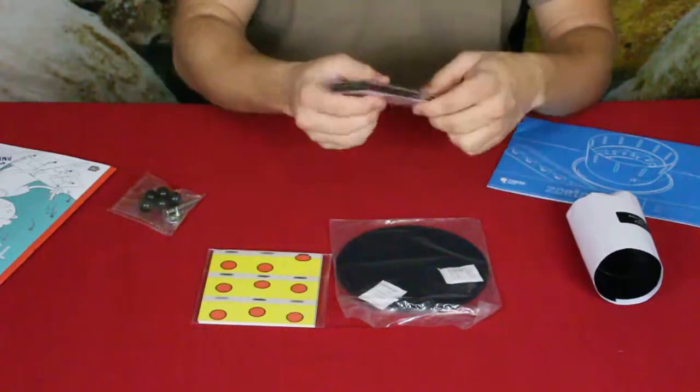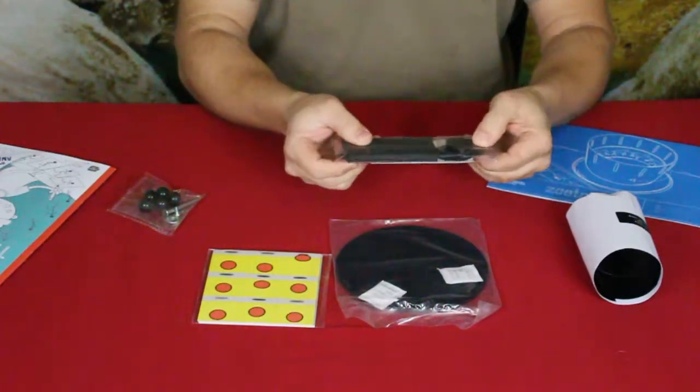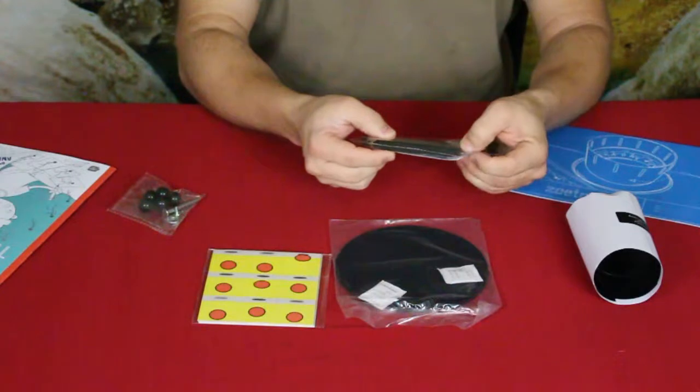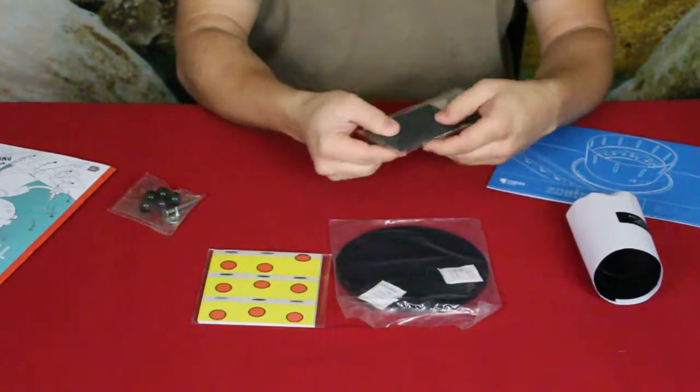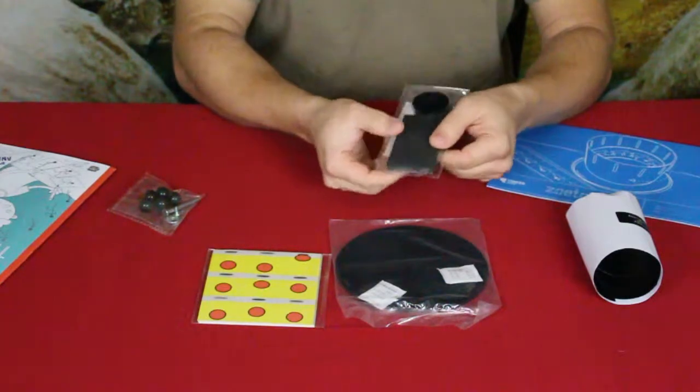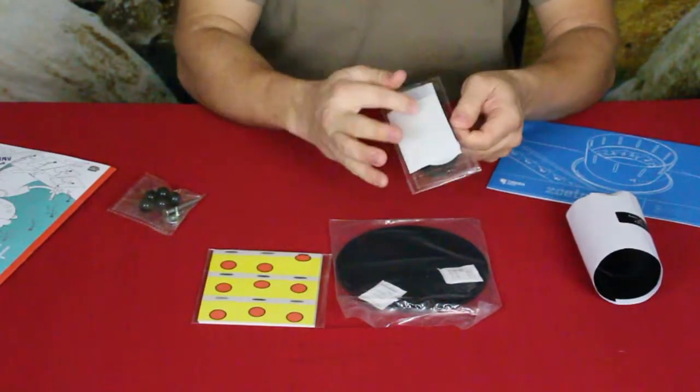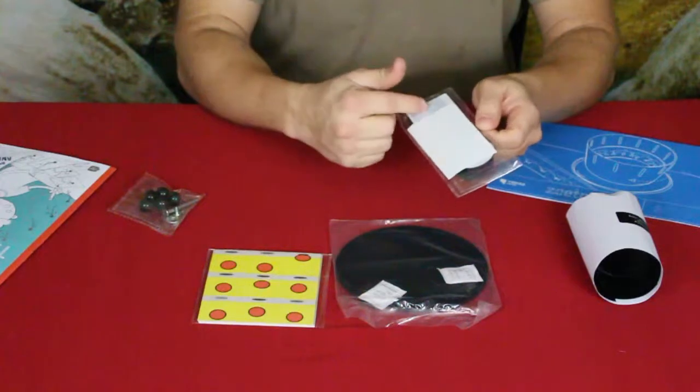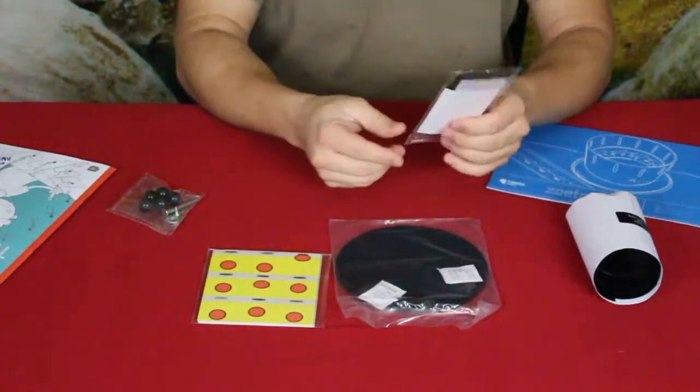We then have some pieces here - a couple of round discs. One feels like foam maybe, the other one feels like it's plastic. Now we've got some shaped-looking foam right here, as well as this white here. I'm going to guess some of that maybe like clear tape.